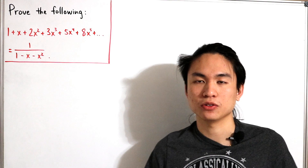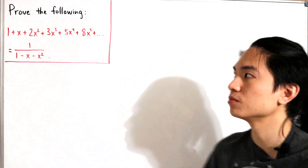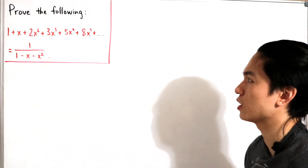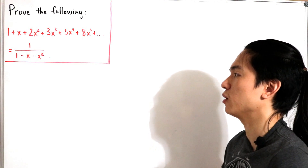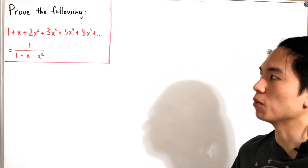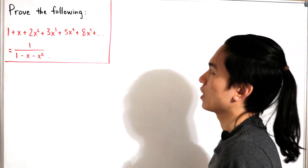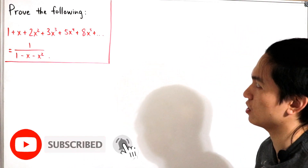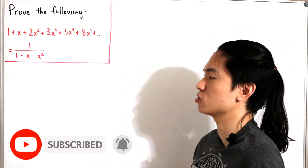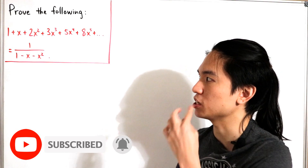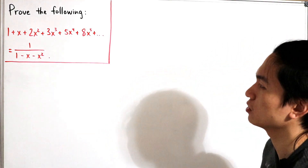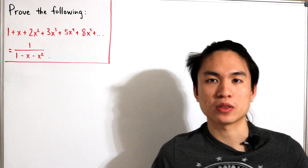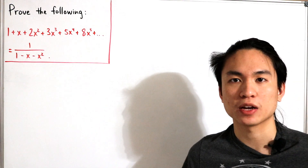Welcome back to another video. Today we want to prove the following statement: that the polynomial expansion 1 plus x plus 2x² plus 3x³ plus 5x⁴ plus 8x⁵, continuing infinitely, is equal to the closed form 1 divided by (1 minus x minus x²).